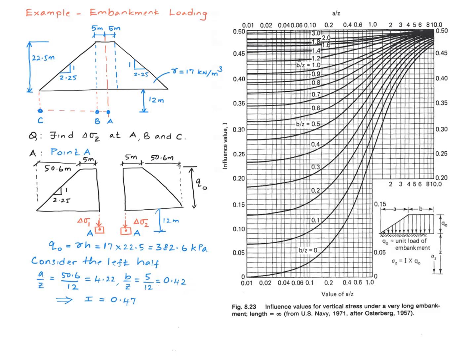And I locate the vertical line corresponding to 4.22, which is around here someplace, and then I go up to the curve that has 0.42. Obviously there's no curve corresponding exactly with that value, so we're going to have to interpolate that. So I'm over here someplace, that gives me 0.47. So the influence value is 0.47.